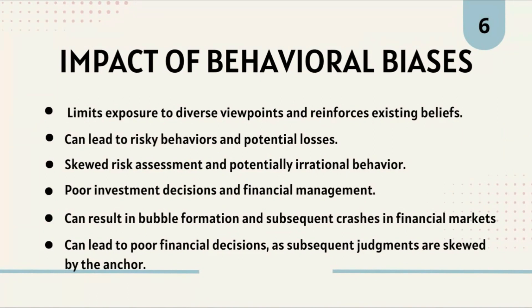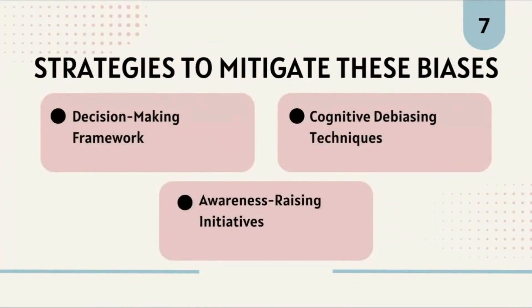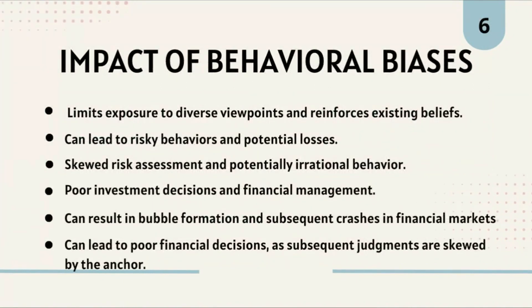The impact: she may delay or skip her children's vaccinations, believing it's riskier to take them, unaware of the actual statistics. She may experience heightened anxiety affecting her overall wellbeing. By not vaccinating on schedule, she increases her children's risk of contracting preventable diseases with serious health consequences. To avoid this availability heuristic bias, she should consult health professionals, use reputable sources like the WHO, and educate herself on the actual statistical probabilities of severe reactions.